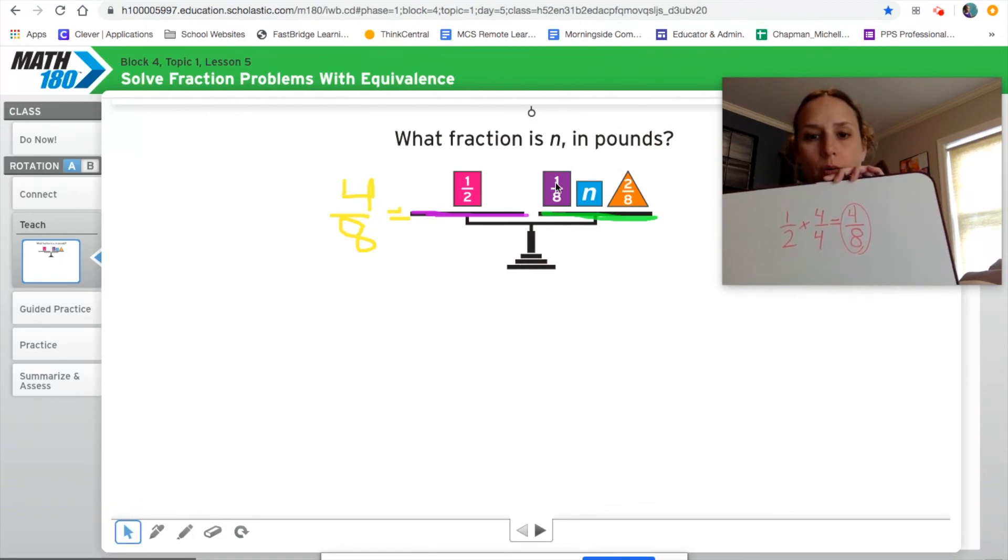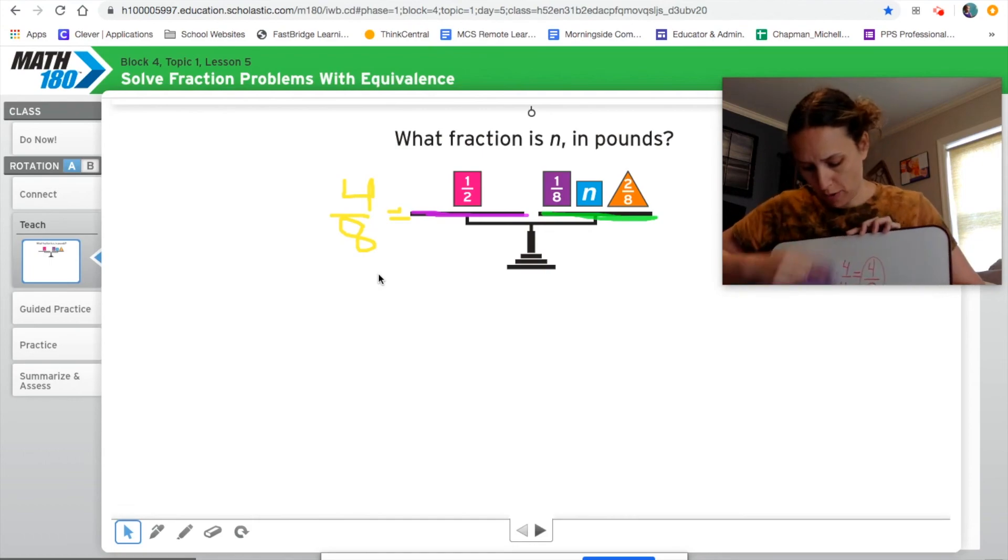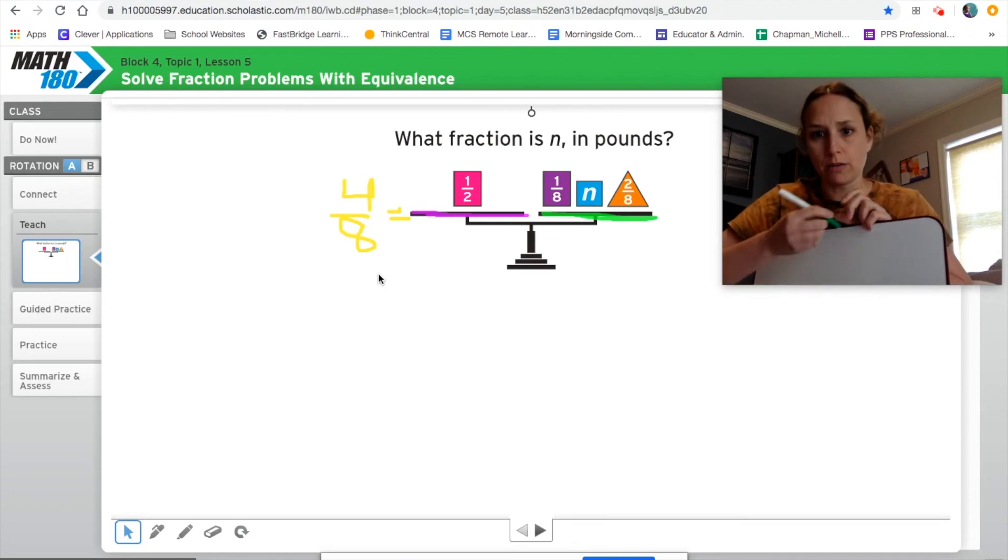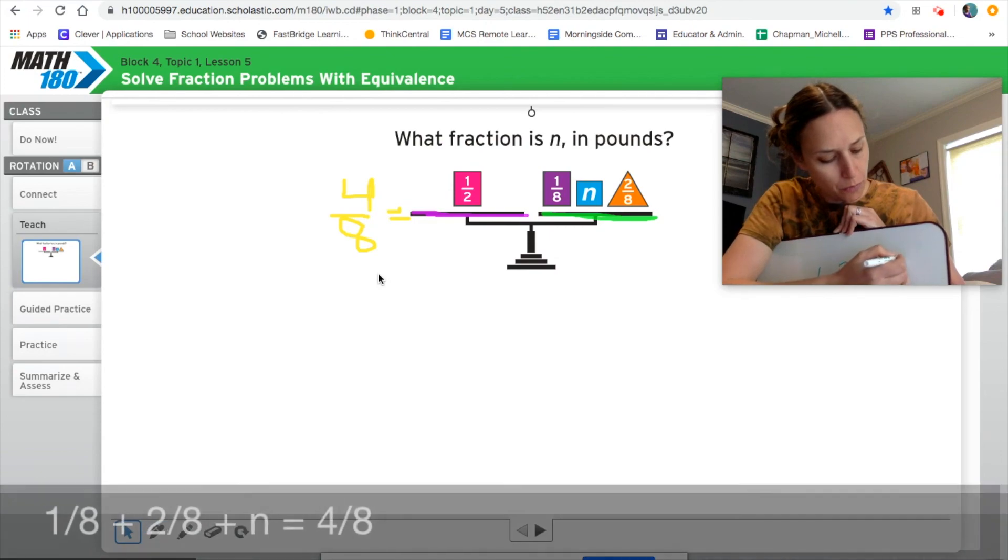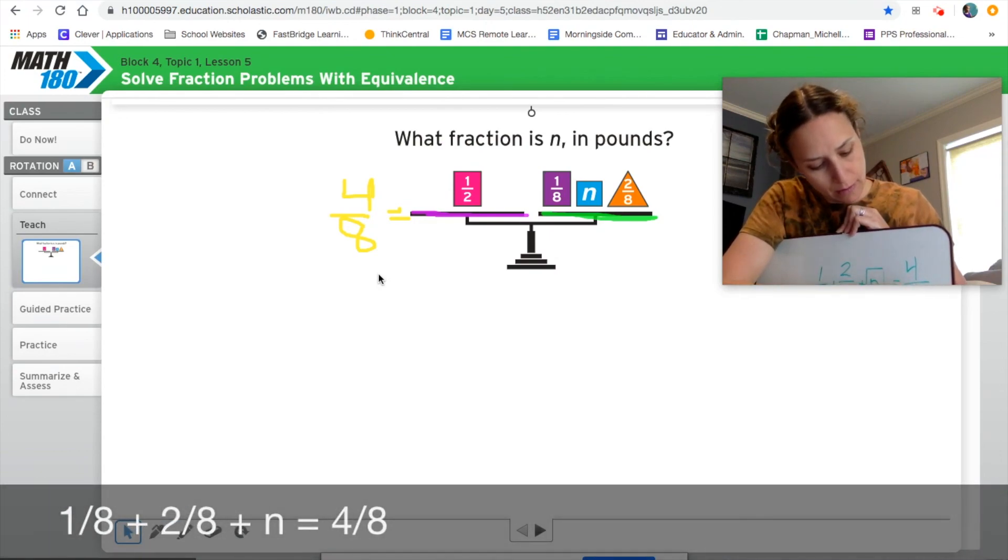So we are going to look at one-eighth plus what plus two-eighths is going to give us four-eighths. Well, there's the easy part for us. That part is easy. So we know if the denominators are the same, we just add up the numerators. So we've got one-eighth plus two-eighths. That's the two known parts. One-eighth plus this n, which is our unknown, and we know it needs to equal four-eighths.